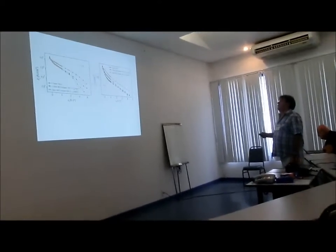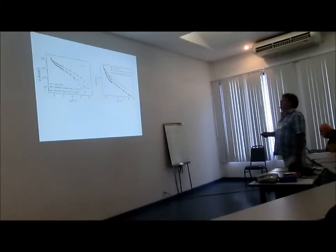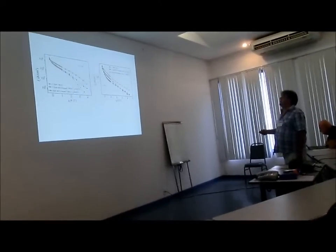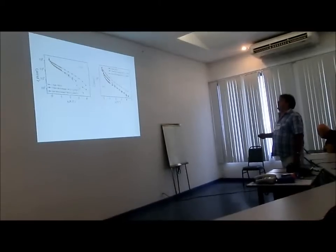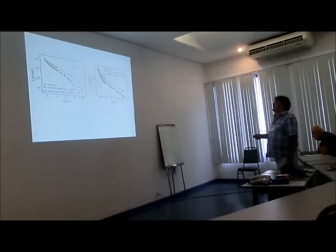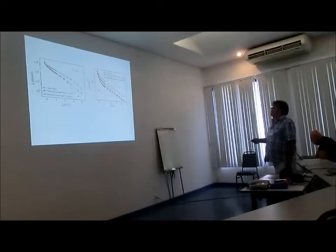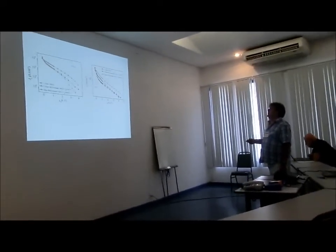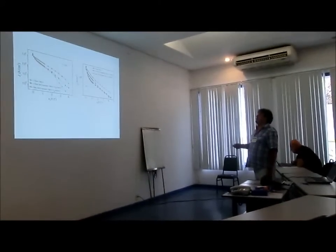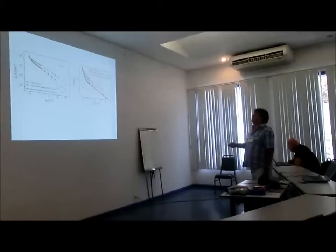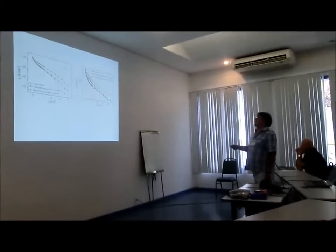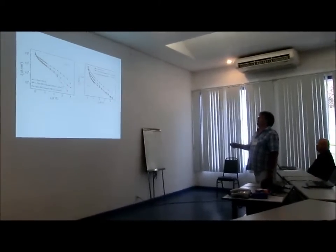And this is the power plant. 1.5 micrometer YBCO. Red one is 1.5 micrometer at 75 Kelvin. Even thicker than this, but grown at 800 degrees Celsius has the best performance.